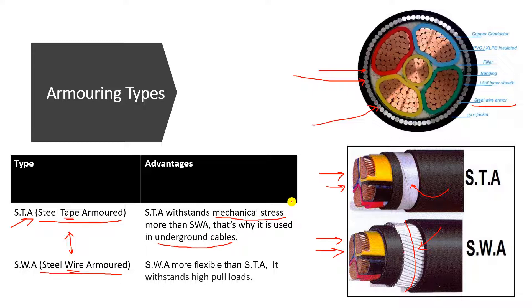The second one, the steel wire armored, has more flexibility than the steel tape armored, and that's why it can withstand high pull loads. So the tape type is made of steel tape, and the wire type is made of steel wires — those are the two main armoring types.